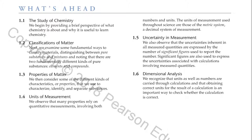Section 1.2: Classifications of Matter. Next, we examine some fundamental ways to classify materials, distinguishing between pure substances and mixtures, and noting that there are two fundamentally different kinds of pure substances: elements and compounds.